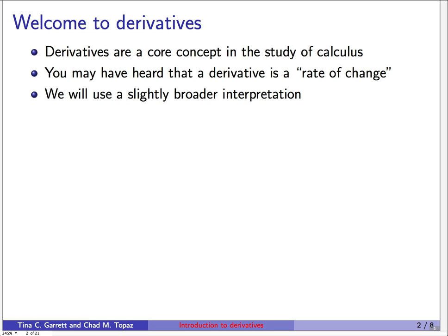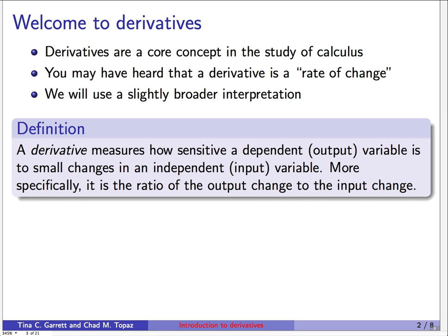You may have heard that a derivative is a rate of change, and that's a perfectly fine interpretation. But in this course, we're going to use a slightly broader interpretation. We'll define a derivative as something that measures how sensitive a dependent variable is to small changes in an independent variable — or how sensitive an output variable is to small changes in an input variable. More specifically, it's the ratio of the output change to the input change.